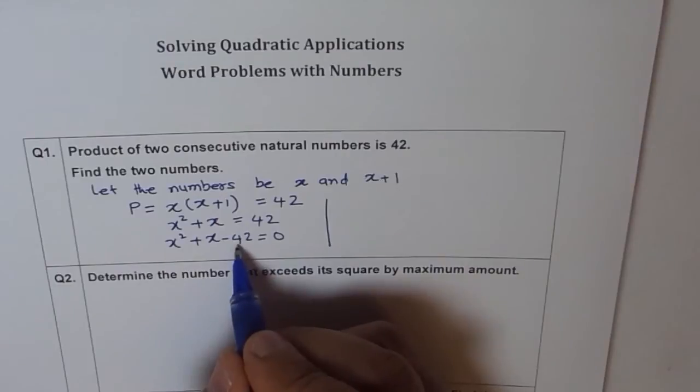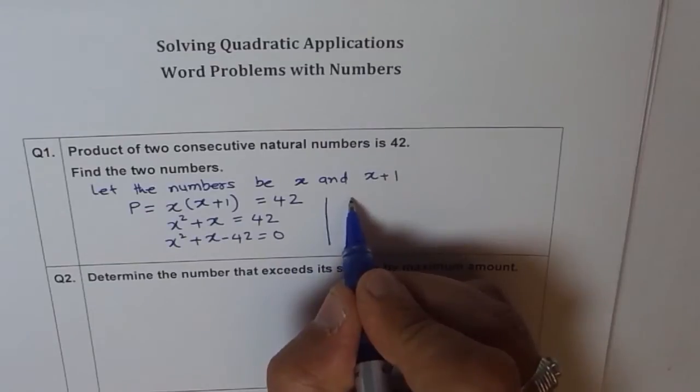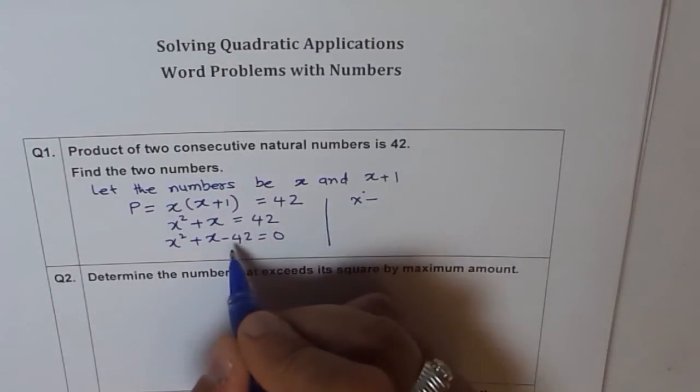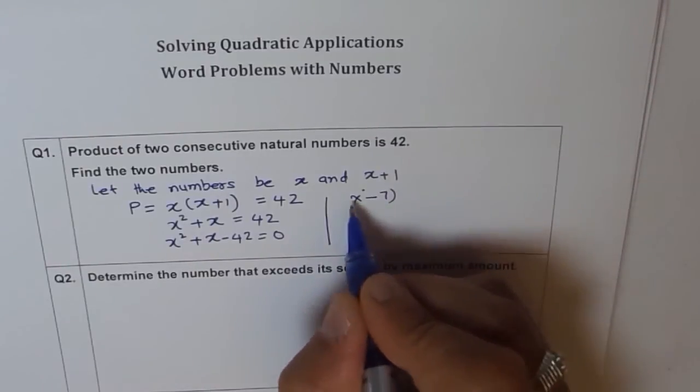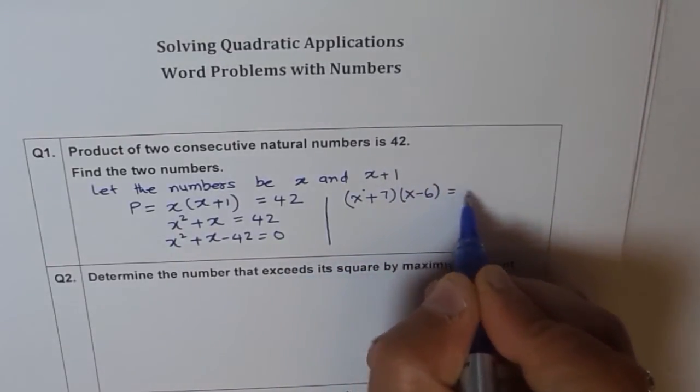So we need a product of minus 42 and a sum of 1. So the two numbers should be 6 and 7. And 7 positive, 6 negative. So therefore, I can write this as x plus 7 times x minus 6 equals to 0, correct?